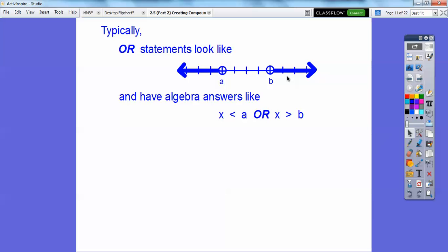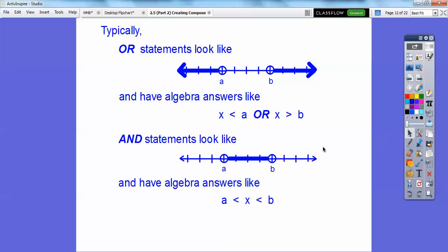So typically, you guys, typically OR statements look like this. They shade in opposite directions, and they have algebra answers with the word OR in between them. You always say this side first, X is less than whatever this number is, or X is greater than whatever this number is. AND statements typically look like this, shaded in between. There are exceptions, but I didn't see any in this section, so I don't want to spend time on them. But AND statements typically look like this, and you have these two numbers right here, and your arrows always point to the left right here. You have this number on the left with your X in the middle, and you have this number on the right.